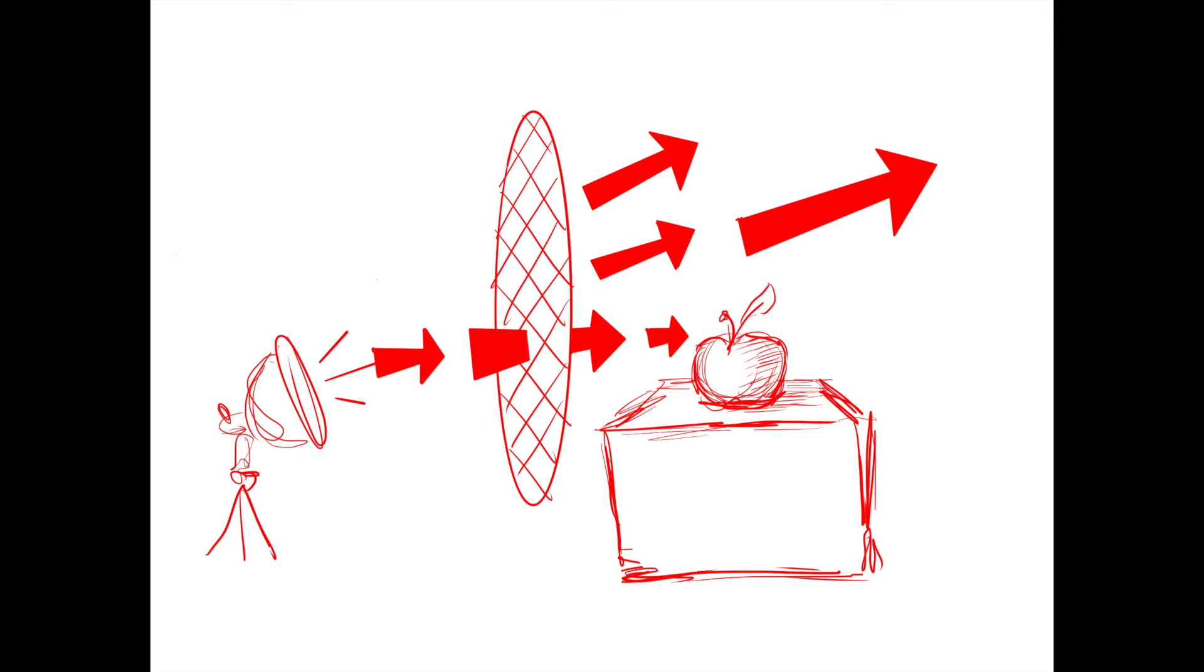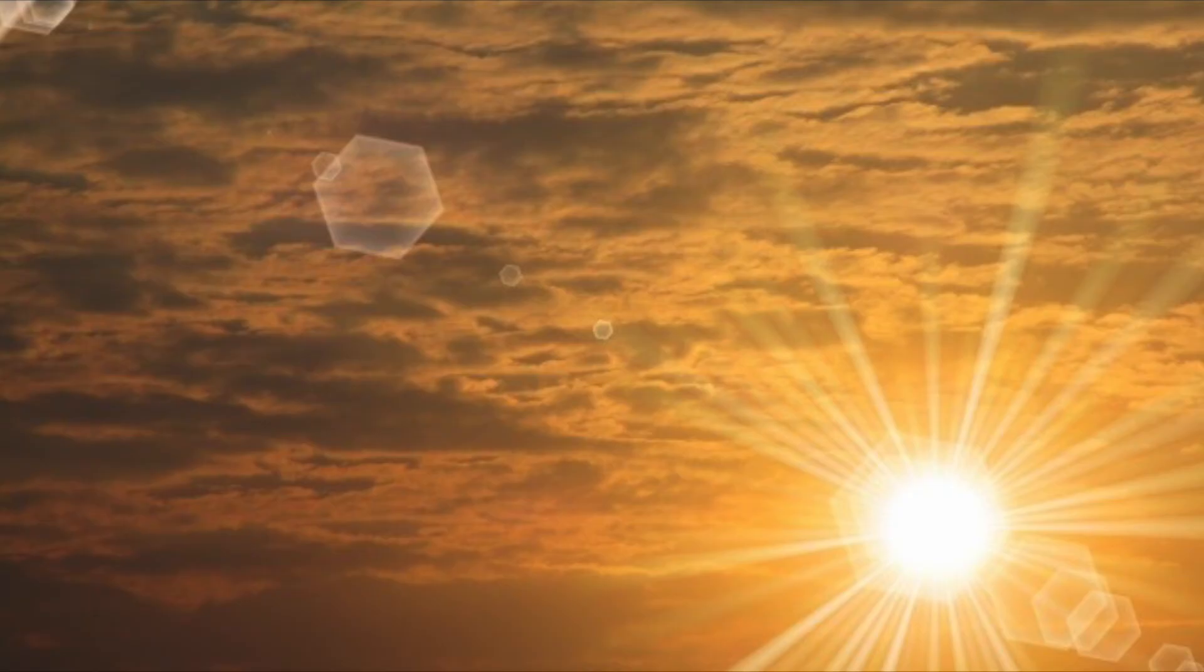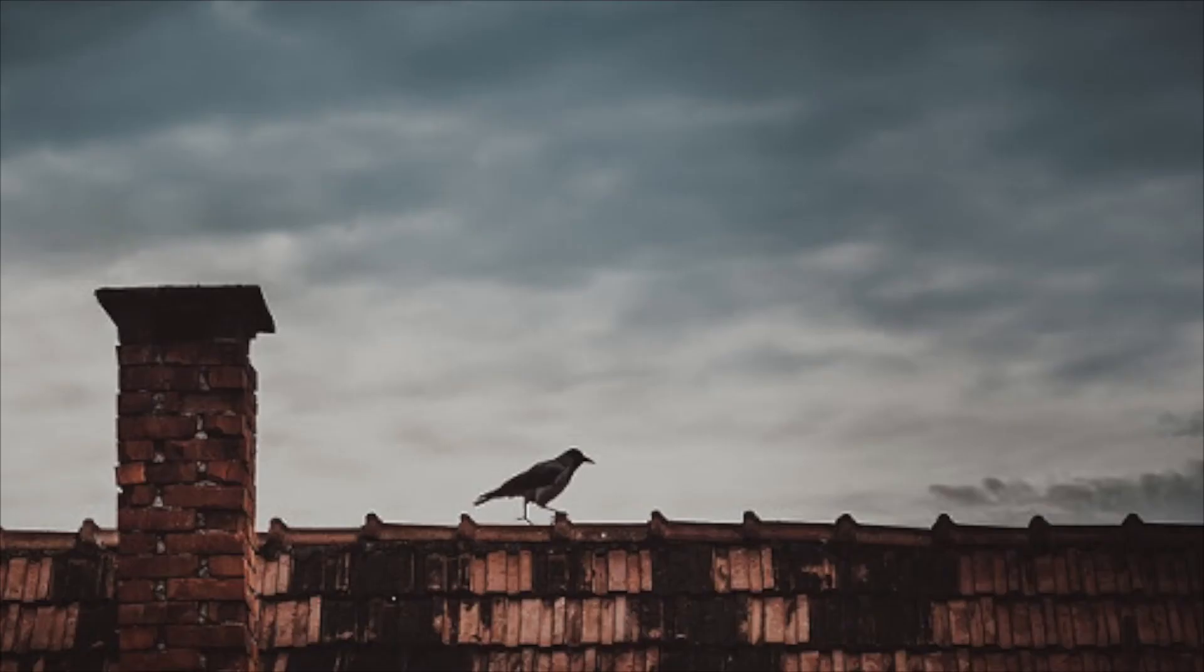Basically, think of it this way. A clear sunny day is an example of direct light. A cloudy overcast day is an example of indirect light because the light rays are being diffused and broken up by the clouds.